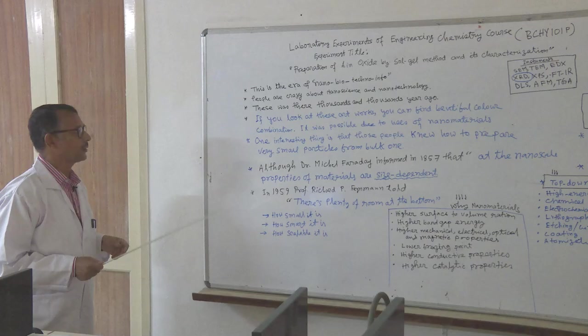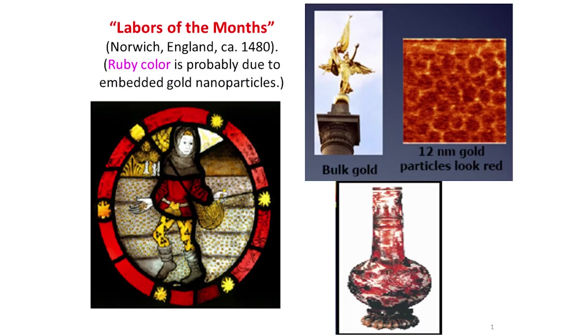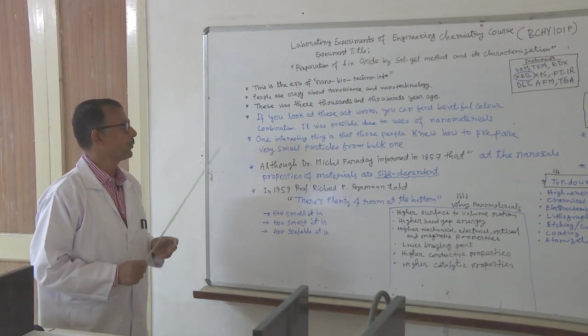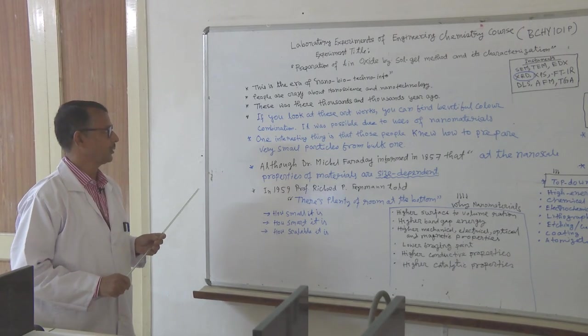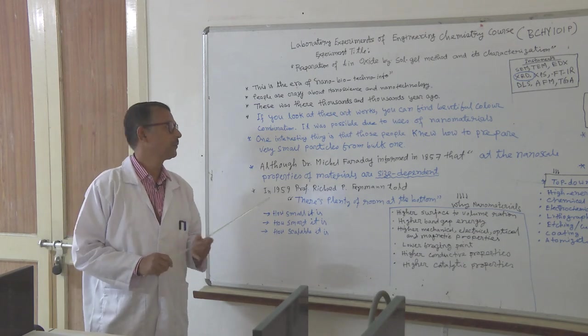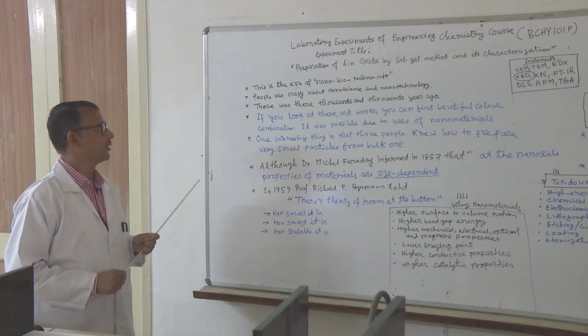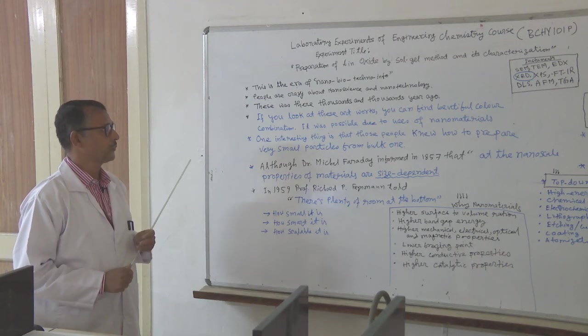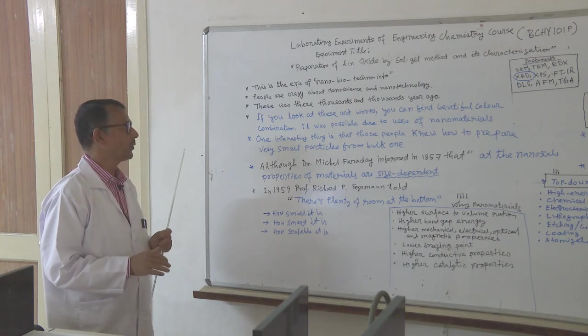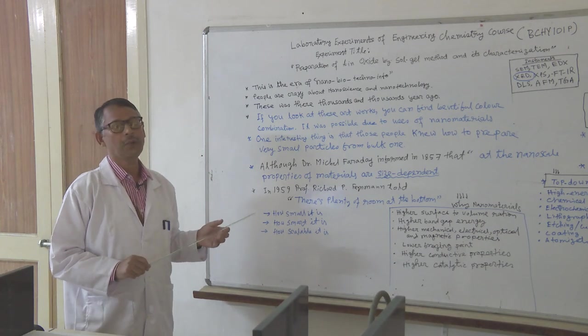This was there thousands and thousands of years ago. People at that time didn't know that this is nano. If you look at these artworks, you can find beautiful color combinations. It was possible due to uses of nanomaterials. One interesting thing is that those people knew how to prepare very small particles from bulk ones.